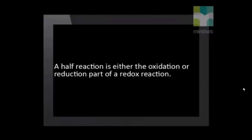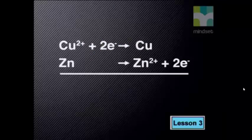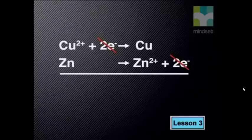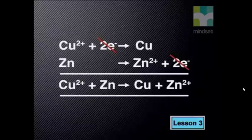Nelly defined a half reaction as either the oxidation or reduction part of a redox reaction. When we add these two half reactions together, we get the full redox reaction. These are the two half reactions: Cu2+ → Cu and Zn → Zn2+. We cancel out the electrons because the same number of electrons lost in the oxidation half reaction is gained by the reduction half reaction. Next, we add the reactants and products together for a complete redox equation.